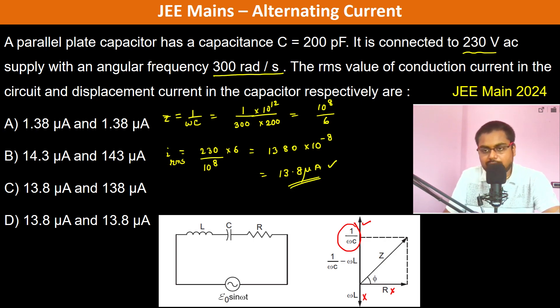So this is going to be the conduction current's RMS value. Either this or this option is going to be correct. Now the displacement current in the capacitor.